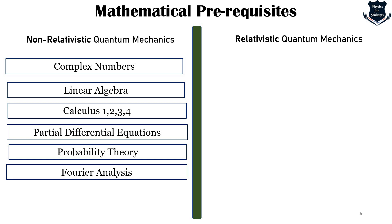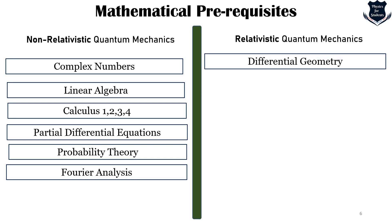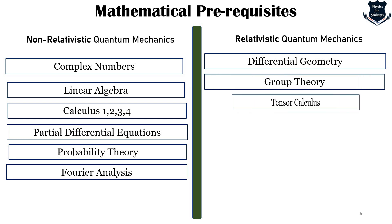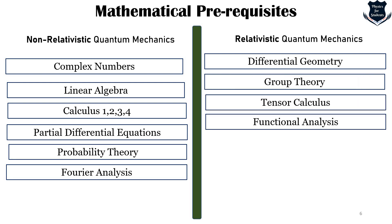These six topics are a must for learning quantum mechanics at grad or undergrad level, unless we are specializing in relativistic quantum mechanics. If you are interested in relativistic quantum mechanics, all six factors are required plus you need to know differential geometry, group theory, tensor calculus, and a little bit of functional analysis. I will make a separate video on how these are related if you put up the comments, but we are not going to discuss relativistic quantum mechanics right now.